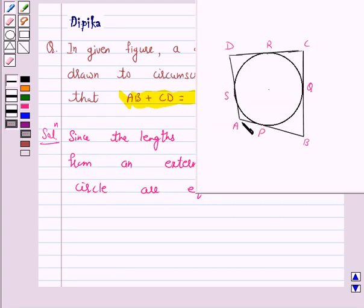Therefore the lengths of two tangents AP and AS which are drawn from A are equal. That is, AP is equal to AS. Let's give this as number 1.